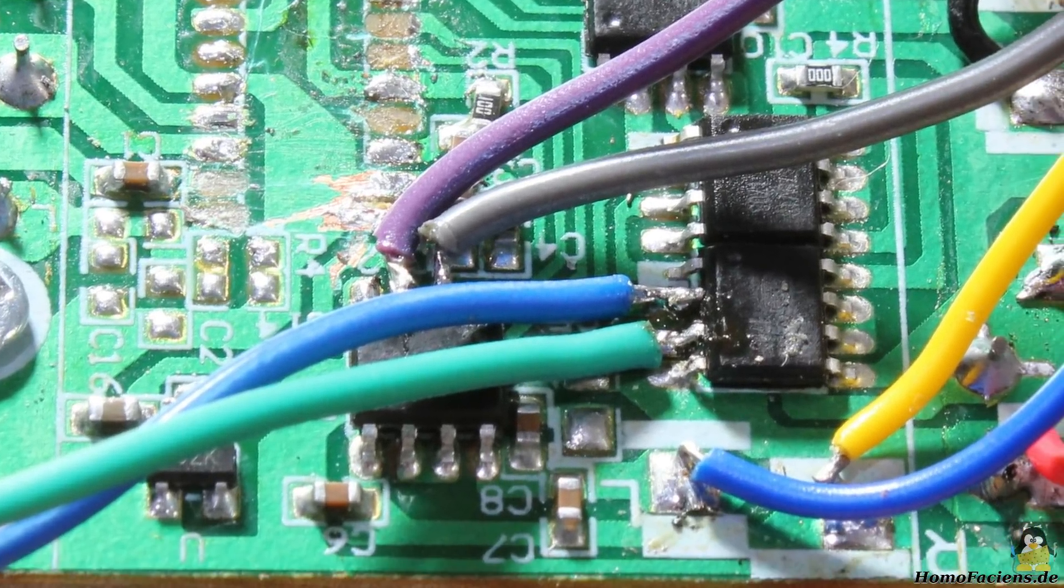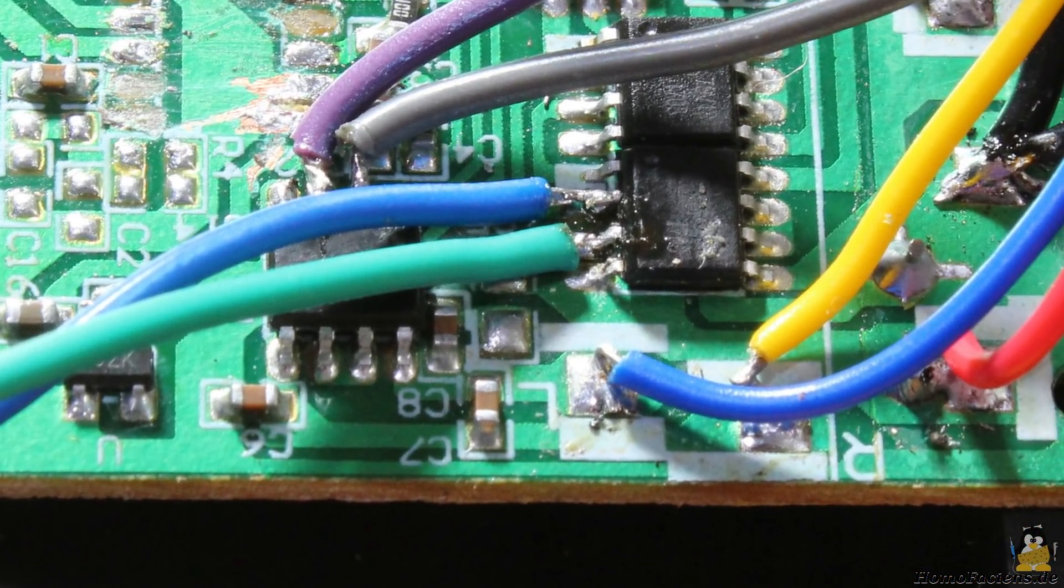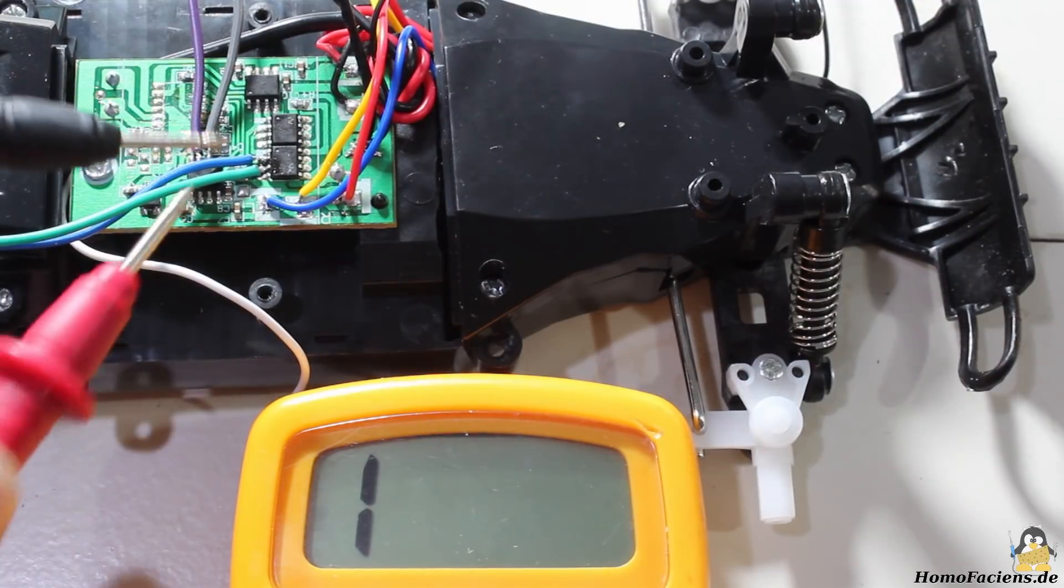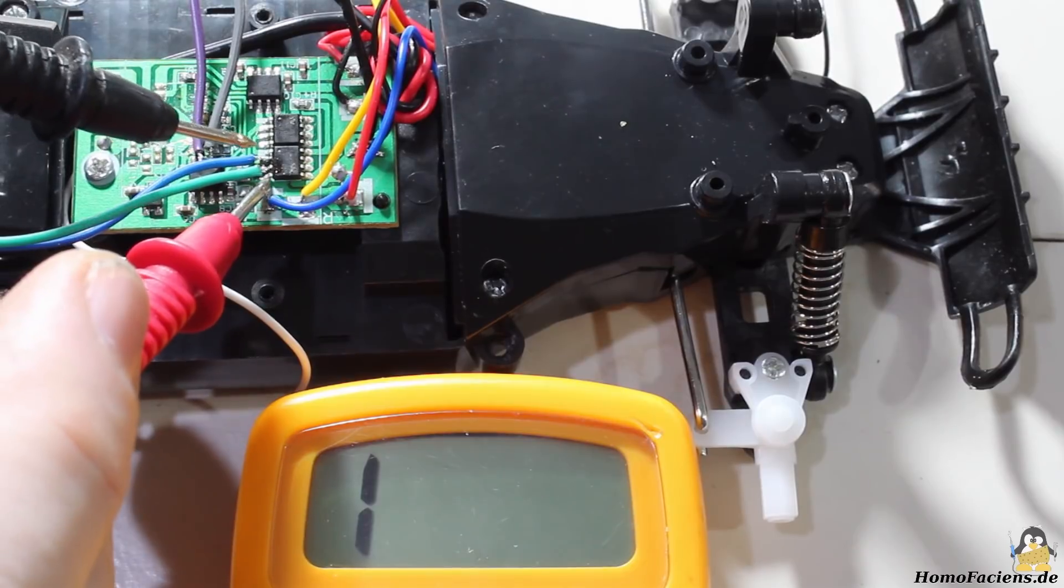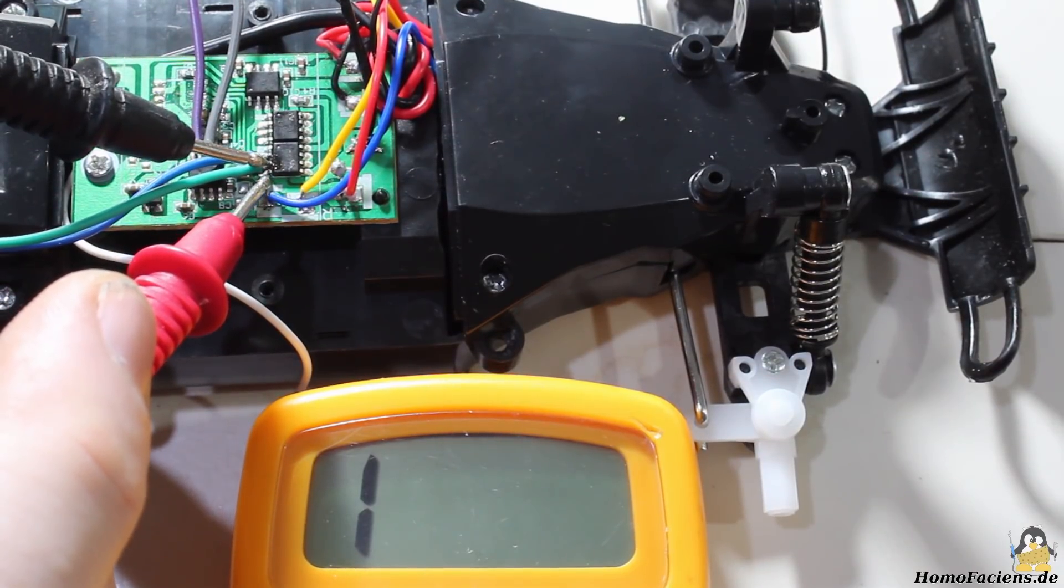Also check if you did not bridge any pins while soldering the wires on the input pins of the H-bridges. With the multimeter switched to continuity you can check if there is no conductive path between the pins of the H-bridge.